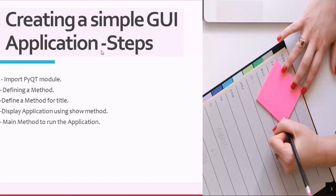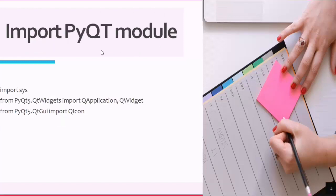Let's discuss each step one by one. The first step is importing the PyQt module. Inside this we are going to define three things: first, we'll import sys, which is the system module; followed by importing QApplication and QWidget from pyqt5.QtWidgets; and lastly we are going to import QIcon, which is available from pyqt5.QtGui — the graphical user interface module.